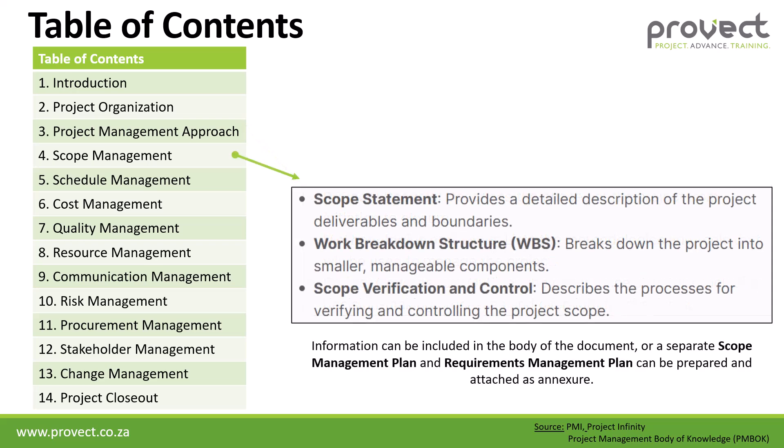The fourth section is scope management. This includes a scope statement providing a detailed description of the project deliverables and boundaries, our work breakdown structure which breaks down the project into smaller manageable components, and scope verification and control describing the processes for verifying and controlling the project scope. This information can be included in the body of the plan or a separate scope management plan, and a requirements management plan can be prepared and attached as an annexure.